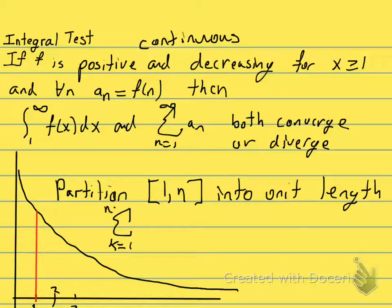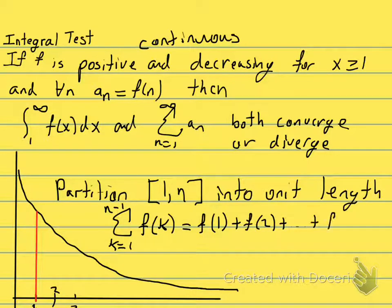And then we're going to look at the upper and the lower sums in terms of the series. So, if we start at k equals 1 to n minus 1 of f(k), that's going to be f(1) plus f(2) plus all the way to f(n-1), and then we'll label this one right here as n minus 1, that's going to give us the upper sums.